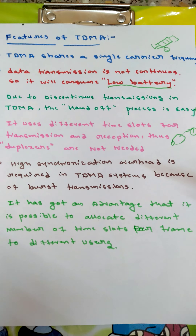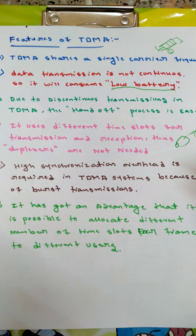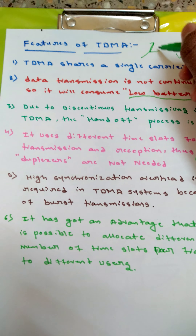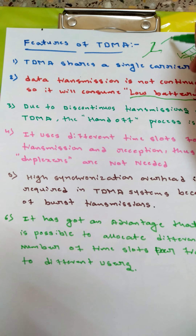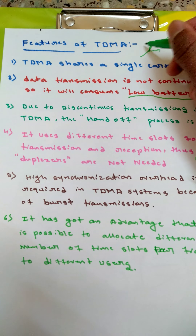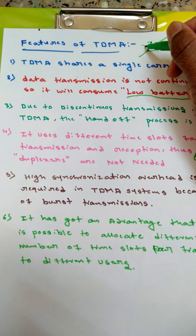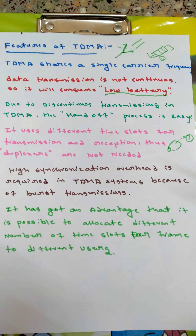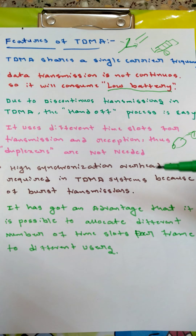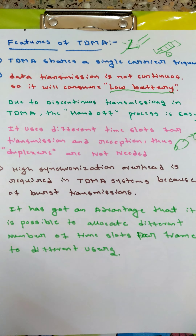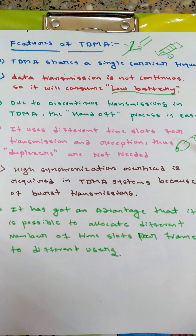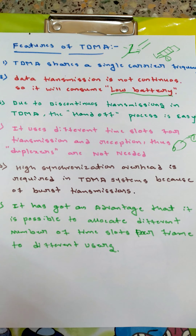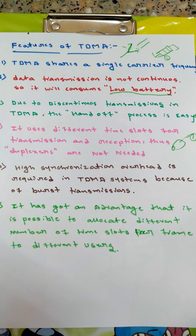TDMA uses different time slots for transmission and reception, so duplexers are not needed. A duplexer is something that switches between two channels — for one time period it switches to one channel, and for another time period it switches to the other channel. Duplexers are needed in FDMA, but in TDMA, since there are different time slots for different users, duplexers are not required.